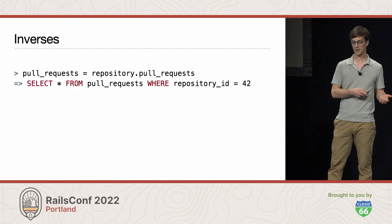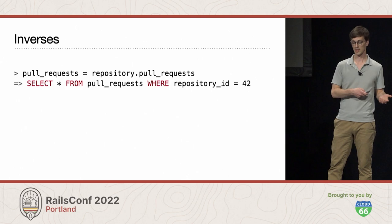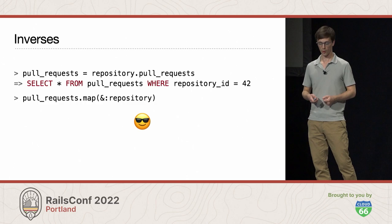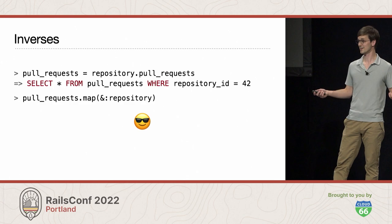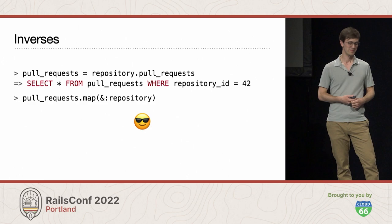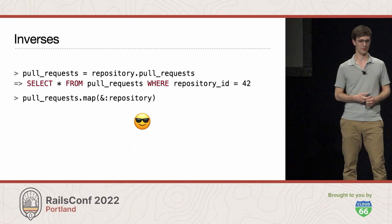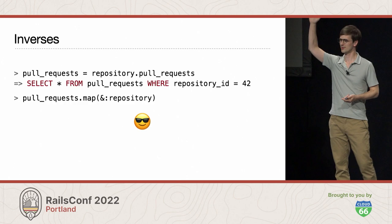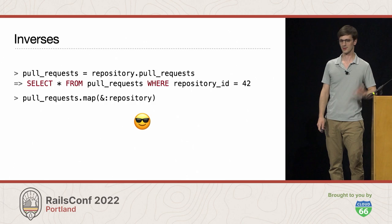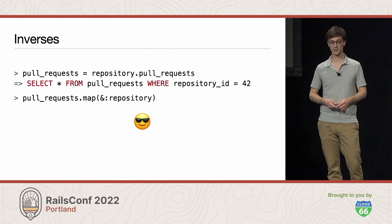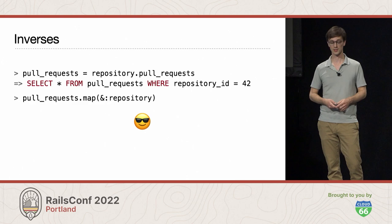Now if I call repository.pull_requests and load those pull requests, and then call the repository method on each of the pull requests I loaded, there's only ever one copy of the repository in memory — no more problems with data inconsistency. If you've ever wondered what the inverse_of option is all about, this is it. It took me years to understand what inverse_of is about, but it's basically about setting up this relationship between associations that are connected. Rails can sometimes guess it for you, but not always.